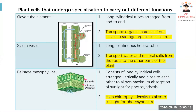Let's look at a safety element — it's a long cylindrical shape, hollow tube, arranged end-to-end. Its function is to transport organic material from the leaf to a storage organ like a fruit. Photosynthesis happens at the leaves, and after finishing, the food produced needs to be stored in organs like fruits. That's why when we eat fruits like apples, they are sweet — it's the product of photosynthesis.